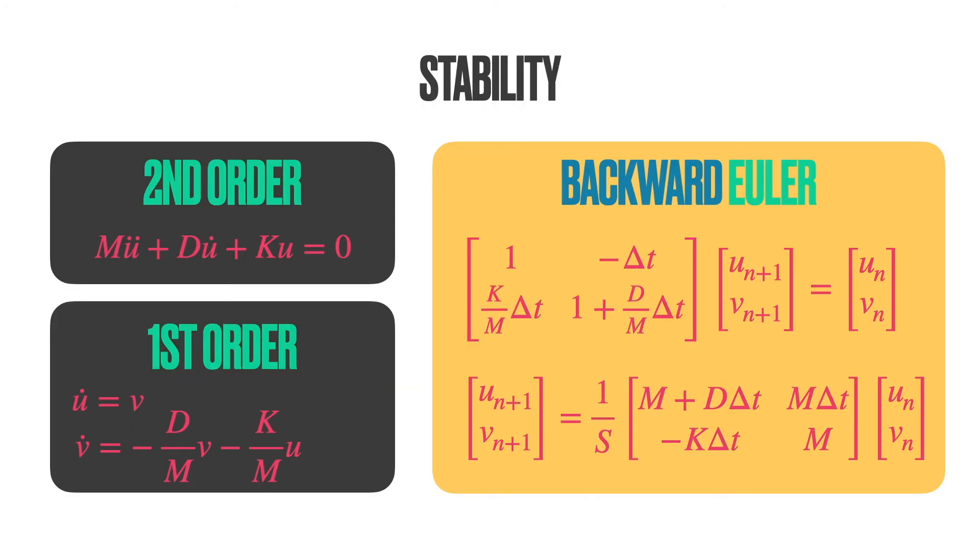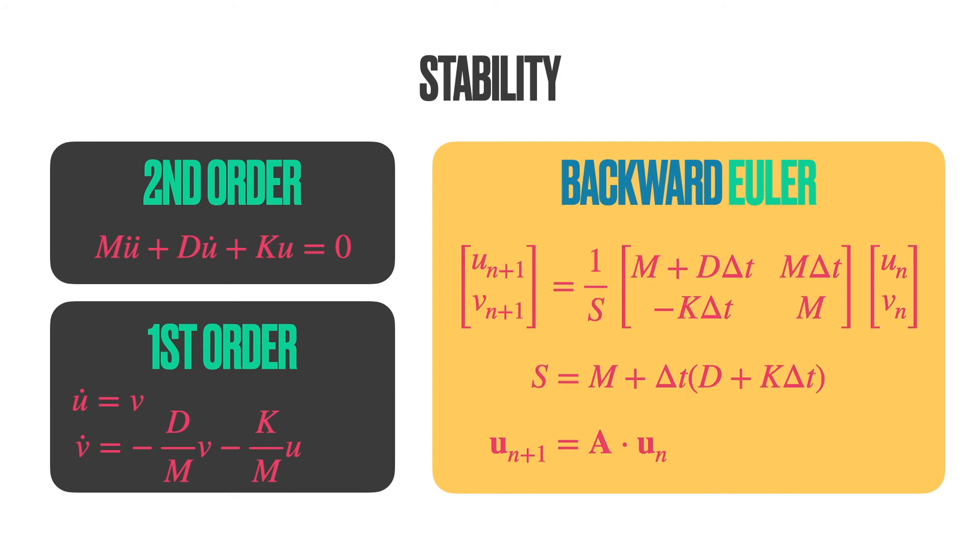Here is the amplification matrix for the backward Euler method. As this is an implicit scheme, we need to take care of the inverse on the left to the right-hand side. Here is the compact formulation.